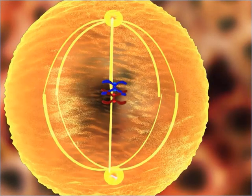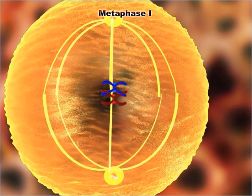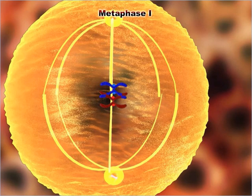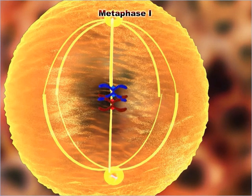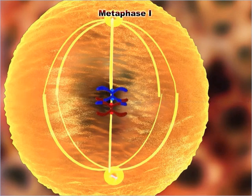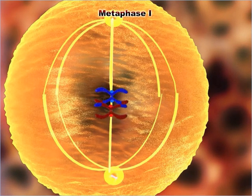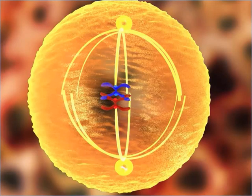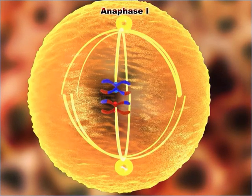Prophase one is followed by metaphase one. During metaphase one, the microtubules from the opposite poles attach to the chromosomes at the kinetochore, and the bivalents align along the equatorial plate with a random orientation. Either of the parental homologs can take up any position on the spindle.